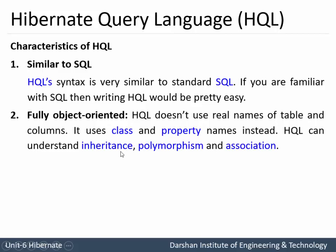HQL can understand inheritance, polymorphism, as well as association concepts of object-oriented programming. Third characteristic: it reduces the size of queries. As HQL is database independent, there is a fixed format for any type of operation performed in the database, which eventually reduces the size of the query.